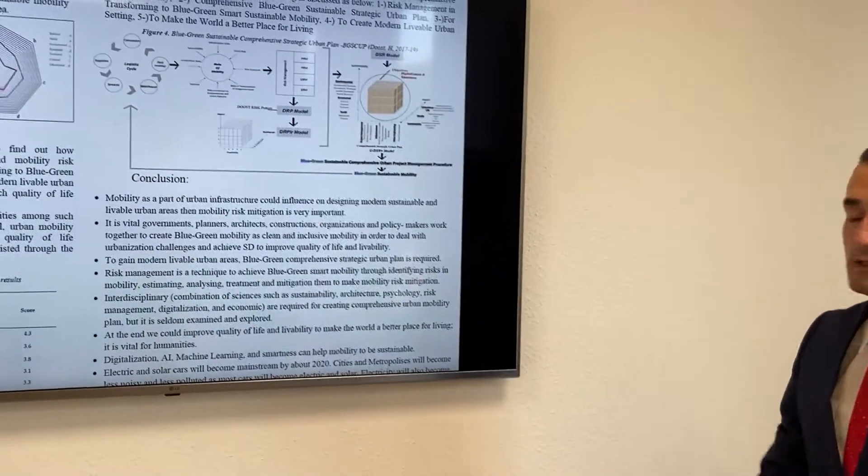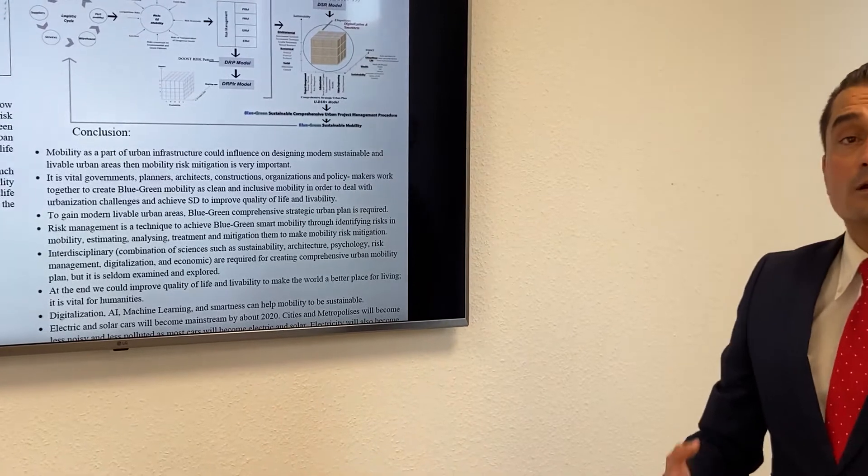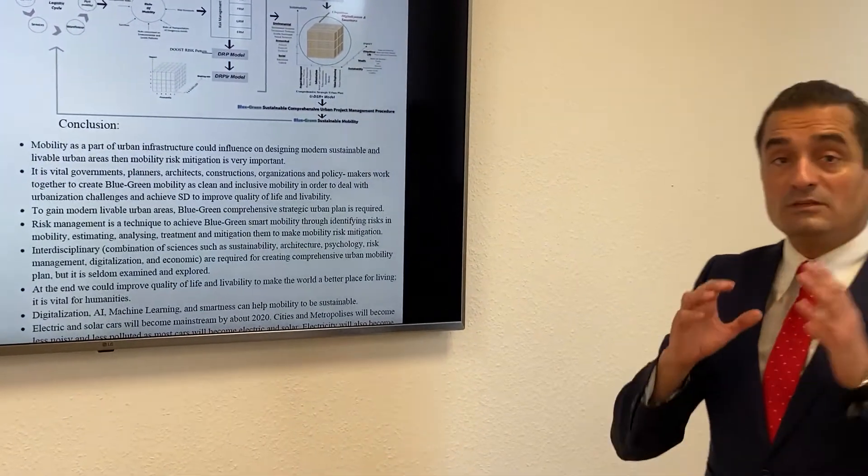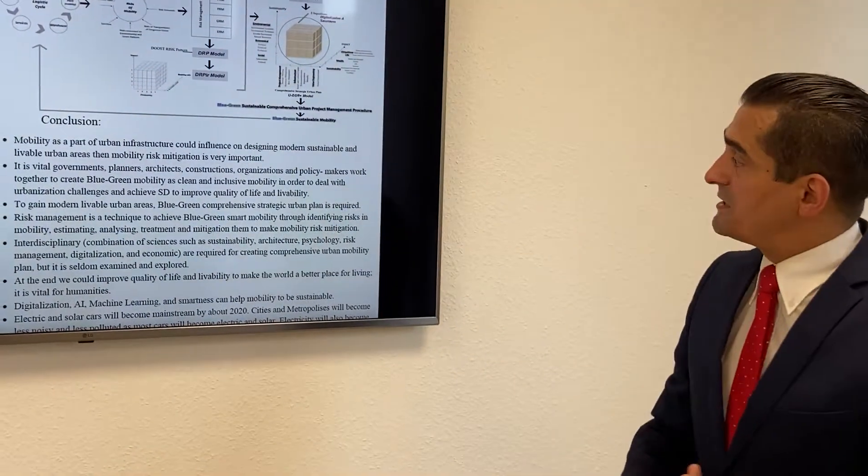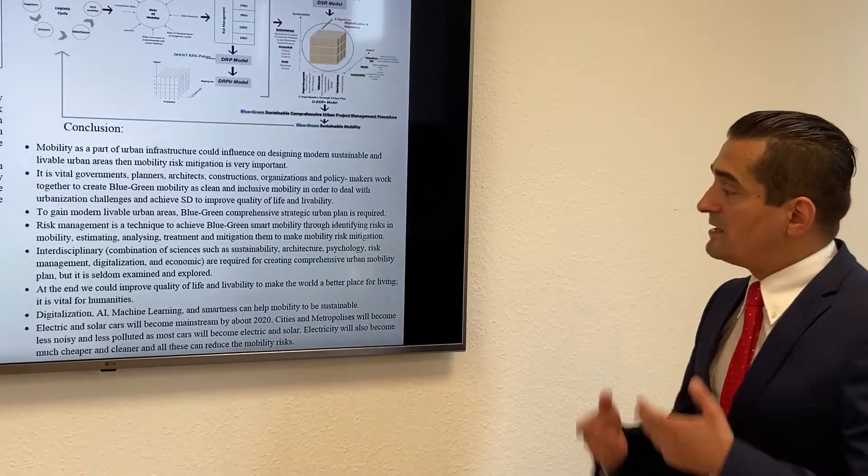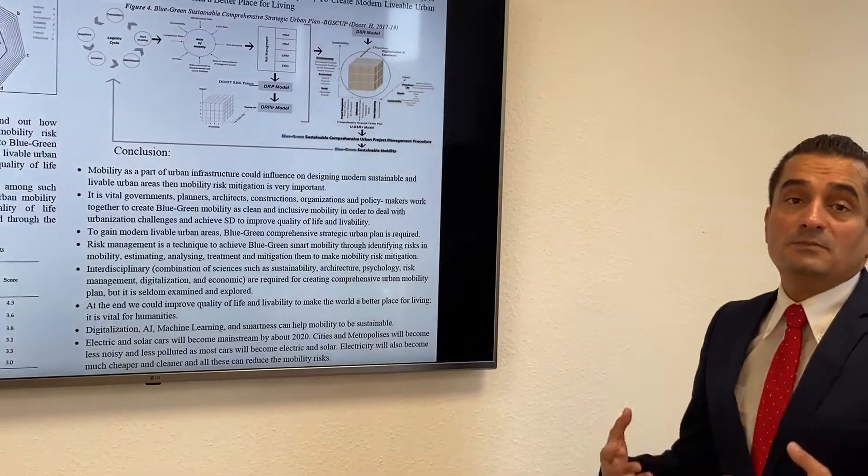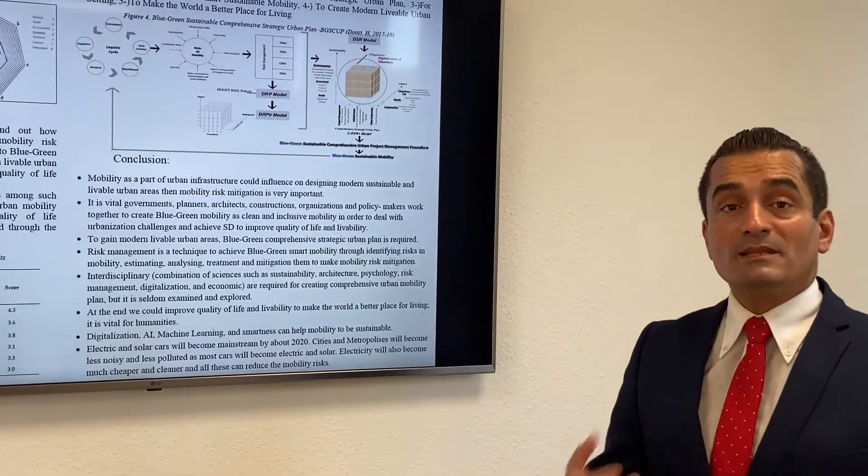In conclusion, mobility is one of the important points for urban settings. If you want to make a comprehensive urban plan, we need to think about mobility and mobility risk mitigation to achieve sustainable development. Digitalization, AI, machine learning, and smartness are very important to make sustainability in our life and make the world a better place for living.